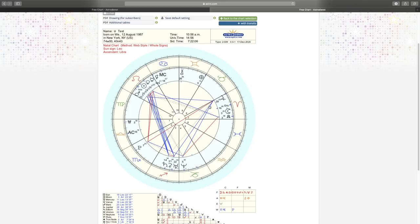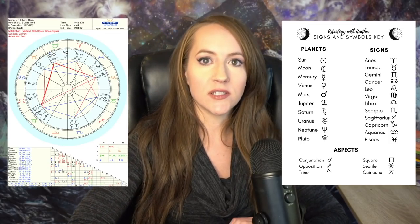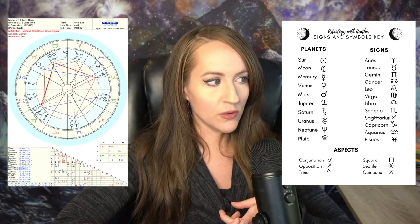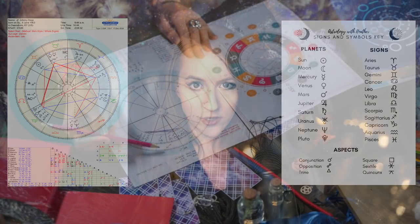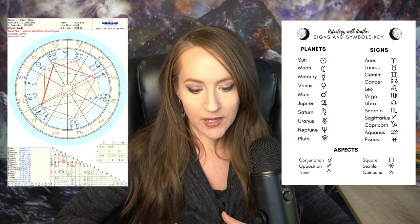Now that you have your chart pulled up, pull up the signs and glyphs PDF you downloaded from my website at the link in the description below. I'm going to explain what you're looking at here. The reason I want you to download this signs and symbols key is because it shows all of the astrological symbols so you can decode them in the birth chart. I actually recommend printing out your chart and writing in the margins next to each symbol what it represents in terms of the planets and zodiac signs.